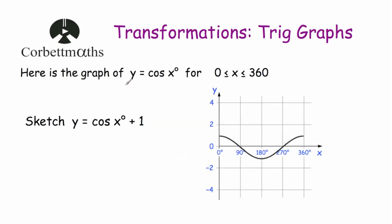Next, we've been given y = cos x for values between 0° and 360°, and asked to sketch y = cos x + 1. The plus 1 is outside the bracket, so it translates the graph 1 unit upwards. The key points: (0°, 1) moves to (0°, 2); (90°, 0) moves to (90°, 1); (180°, -1) moves to (180°, 0); (270°, 0) moves to (270°, 1); and (360°, 1) moves to (360°, 2). Drawing a smooth curve gives y = cos x + 1.